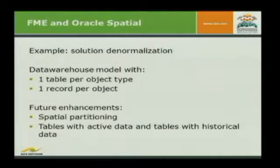So we were thinking, what kind of solution can we do? We had this normalization model and the best thing to do when you retrieve data is to denormalize it — store it like a proper database. Use this schema for updating, and then for viewing use a data warehouse model in which we have one table per object type — your roads table — one record per object. We did that using Oracle technology, using PL/SQL to move data from one database to another.